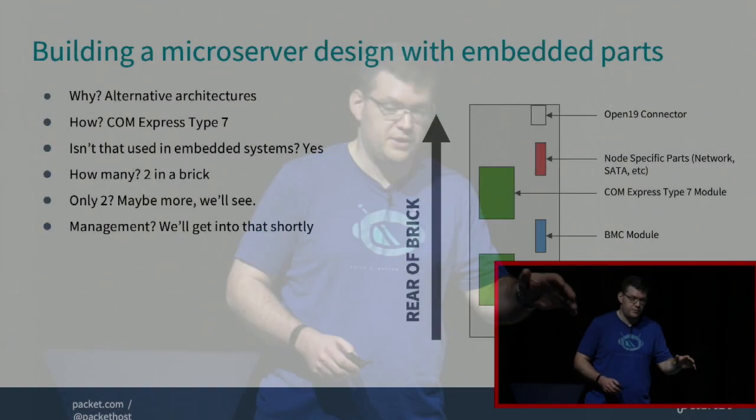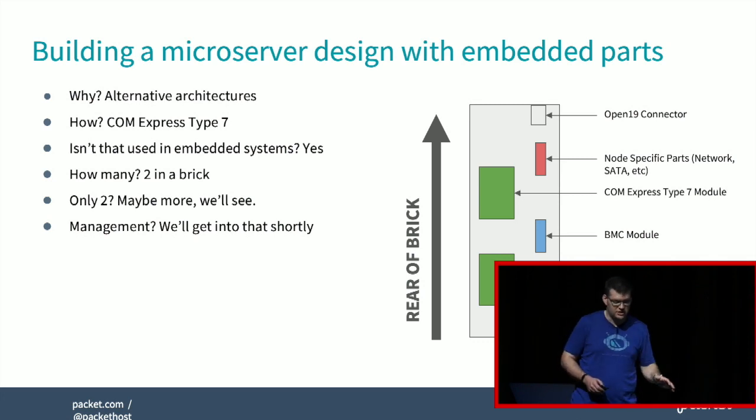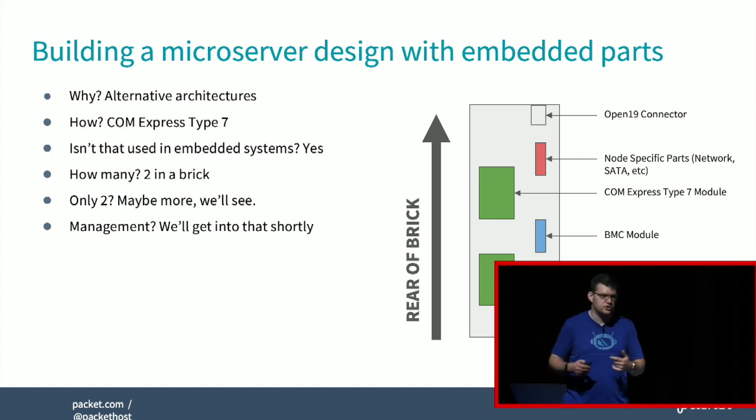One thing we're looking at is enabling other architectures inside Open-19 infrastructure — specifically things that are not purpose-built x86 boards, which comes a lot from the embedded space. We've been developing the use of COM Express Type 7 modules as micro servers on a carrier board in an Open-19 infrastructure. We could put more than two in a brick, but we're starting with two since it gives each one two network links. The COM Express Type 7 standard gives you the processor, memory, and a bunch of interconnect, and then we put on the carrier board the pieces needed to plug into the rest of the infrastructure — network switches, storage — and just swap out modules. It's a cheap way to try new architectures with off-the-shelf components.